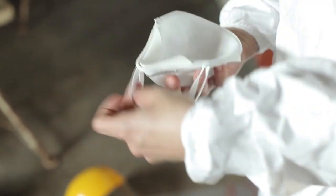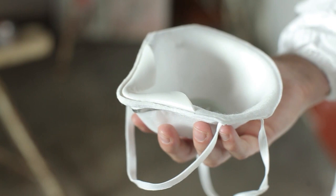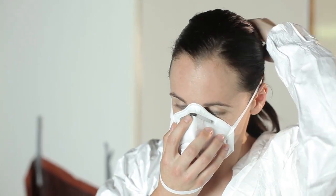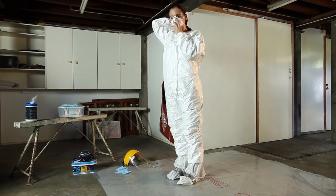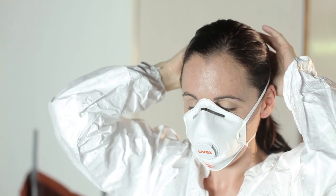When putting on a disposable respirator, hold it in your hand with the nose piece at your fingertips, allowing the head straps to hang freely below your hand. Position the respirator under your chin and over your nose and hold it firmly in position. Pull the elastic straps over the top of your head. The bottom strap should be below your ears and the top strap high on the back of your head, above the ears.